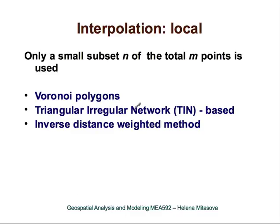Let's look first at the local interpolation methods. In local interpolation methods, to compute the value at a grid point we use only a small subset of the total points. The three most important local methods are Voronoi polygons or nearest neighbor, triangular irregular network (TIN), and inverse distance weighted method.